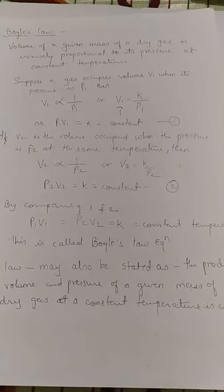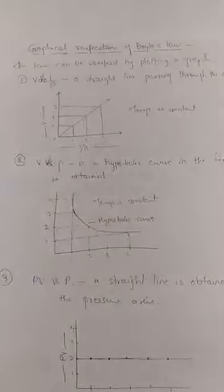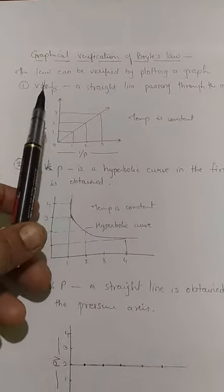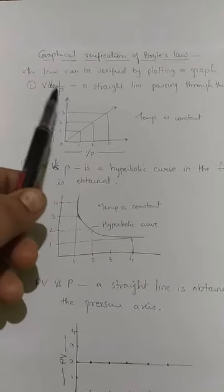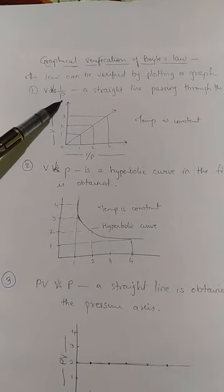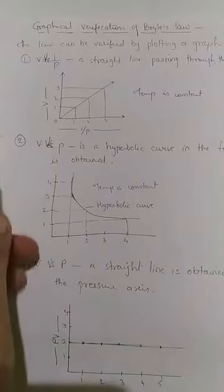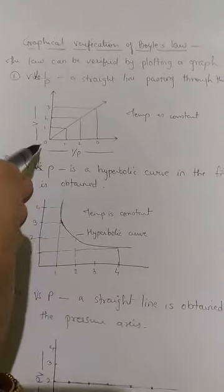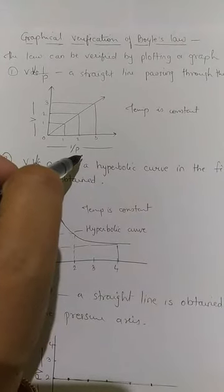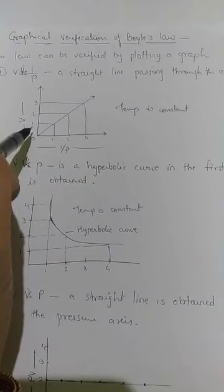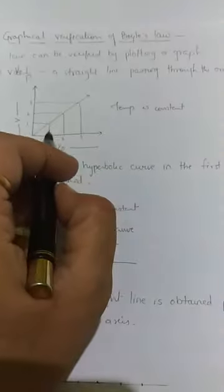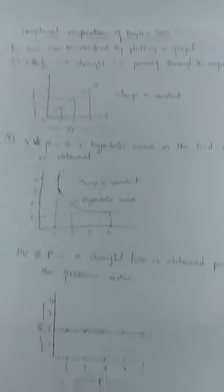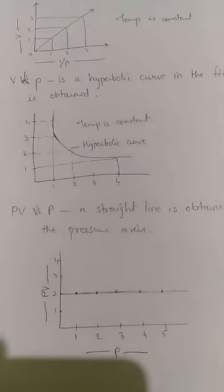This law can also be explained and verified with the help of graphs — this is the graphical verification of Boyle's Law. In the first graph, volume versus 1/pressure is plotted. Since volume and pressure are inversely proportional, if volume increases, pressure decreases and vice versa. The result is very important: the graph is always a straight line passing through the origin. This is the first graphical verification of Boyle's Law.